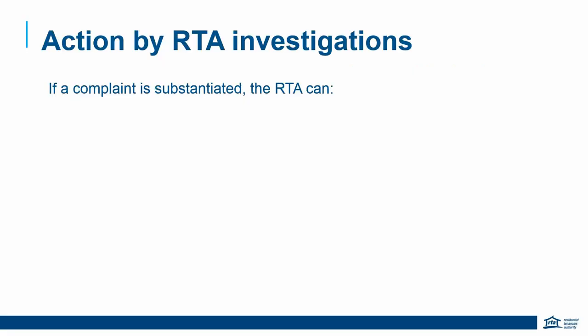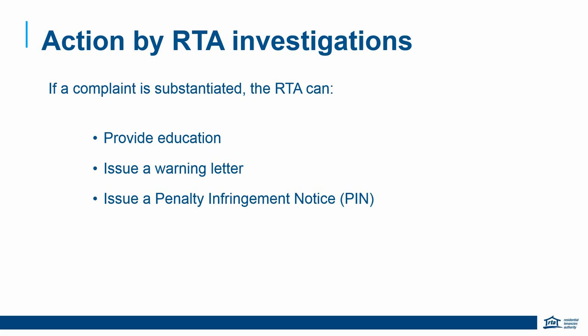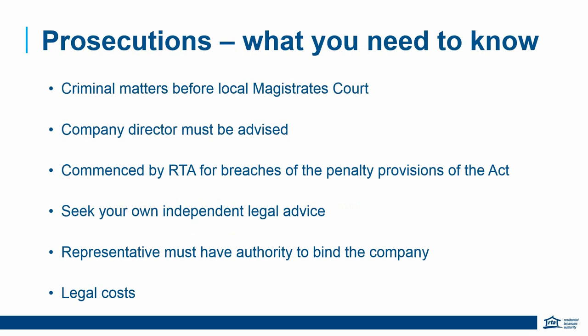With our investigations, if a complaint is substantiated by an RTA investigator, we can provide education and issue a warning letter and monitor the situation, issue a penalty infringement notice (PIN) — similar to a speeding ticket and usually a smaller amount than a prosecution — or commence a prosecution. With a prosecution, if you have breached the penalty provisions of the Act — and there are around 125 sections with penalty provisions — the RTA can prosecute and this is a criminal matter taken before the Magistrates Court, not QCAT. For real estate agents or companies, the director must be advised and the representative must have authority to bind the company. The RTA recommends seeking independent legal advice whether a PIN has been issued or a prosecution has been notified.